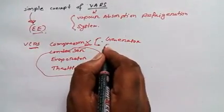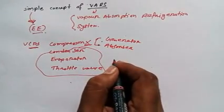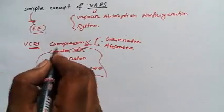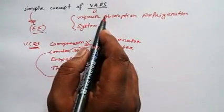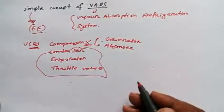Another one is absorber. I'm just telling you the difference between VCRS vapor compression refrigeration system and VARS. I've already shared with you what is VCRS cycle, so let's go for it.